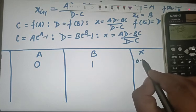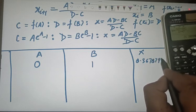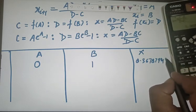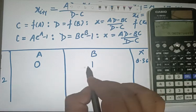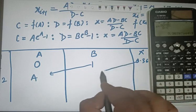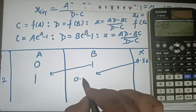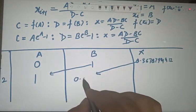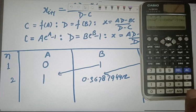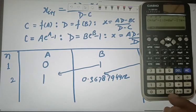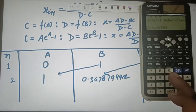The value of x from iteration 1 is approximately 0.36787944412. In the next iteration, the previous b becomes the new a, and this x becomes the new b. So for iteration 2: a = 1, b = 0.367879441412. Enter these values and press equal.